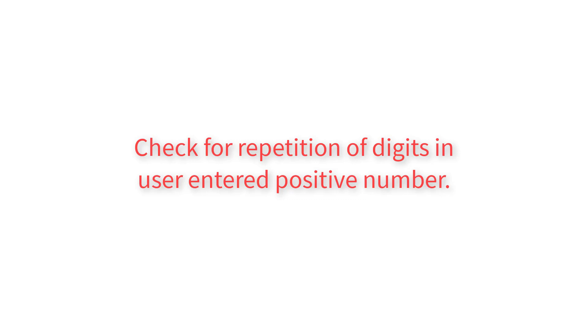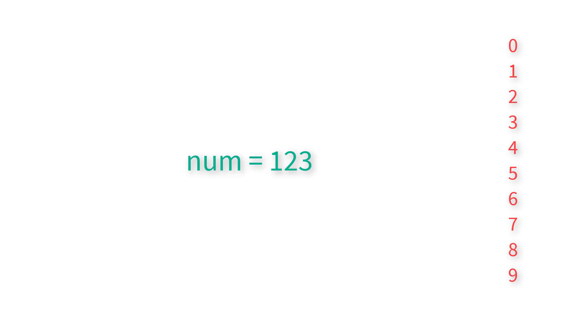Let's write a C program to check for repetition of digits in a user entered positive number. We already know that any positive number can be formed using digits 0 to 9. So if the user enters a number 1, 2, 3, there are no repeated digits in this number. But what if the number is 1, 2, 3, 2? In that case, the digit 2 has been repeated in this number, and we will output that message onto the console window.